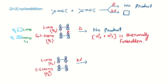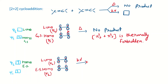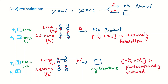Under photochemical conditions, we take the excited state HOMO of one molecule and the LUMO of the other. For ethene with ψ1 and ψ2, one electron from the ground state excites to the nearest vacant orbital ψ2, making ψ2 the excited state HOMO. Drawing ψ2 with orbital picture plus-minus, and LUMO ψ2 oriented to show bonding interaction, same-phase interaction is possible. Therefore cyclobutane forms and π2s + π2s is photochemically allowed.